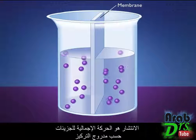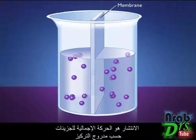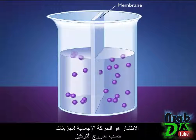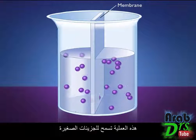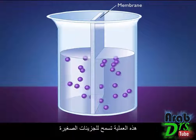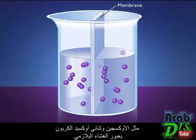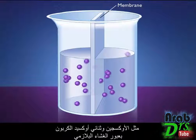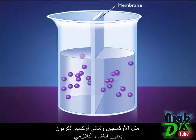Diffusion is the net movement of molecules down a concentration gradient. This process allows small molecules such as oxygen and carbon dioxide to cross the plasma membrane.